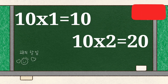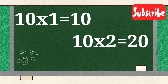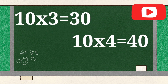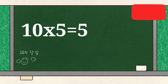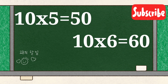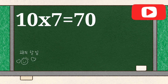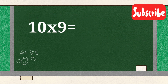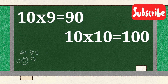10 1's are 10, 10 2's are 20, 10 3's are 30, 10 4's are 40, 10 5's are 50, 10 6's are 60, 10 7's are 70, 10 8's are 80, 10 9's are 90, 10 10's are 100.